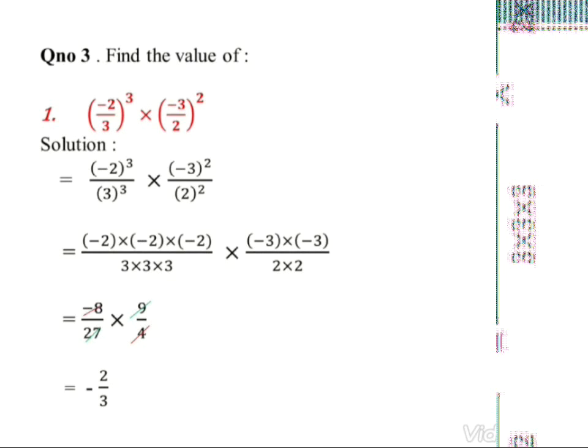Cancellation is happening: 4 ones are 4, 4 twos are 8 — both cancel. 9 ones are 9, 9 threes are 27 — 9 and 27 cancel. When you cancel: 2 ones are 2 and 3 ones are 3. So the answer is -2/3.